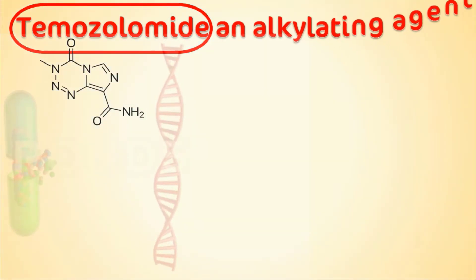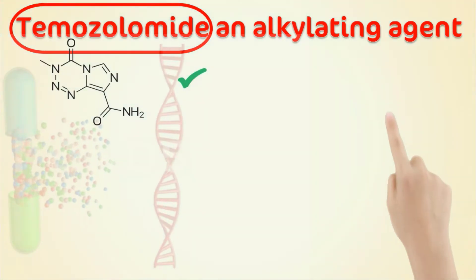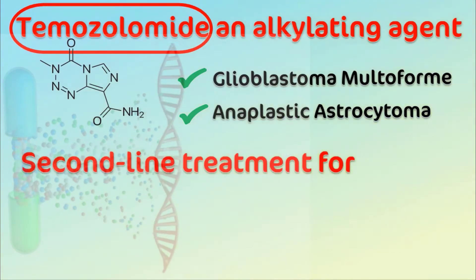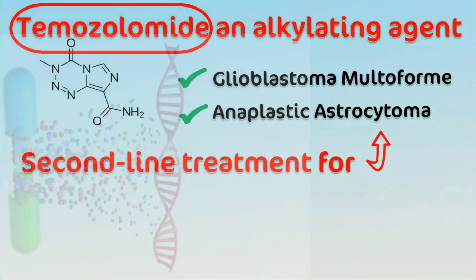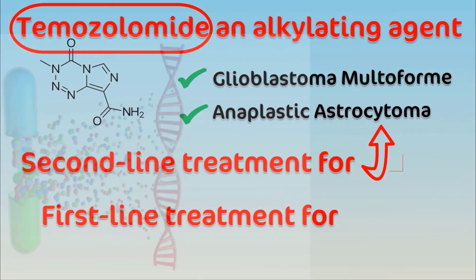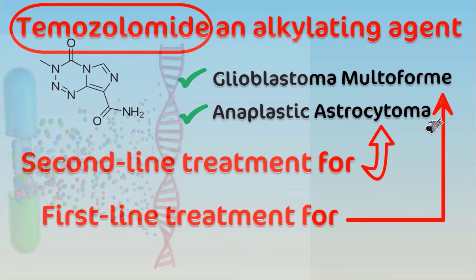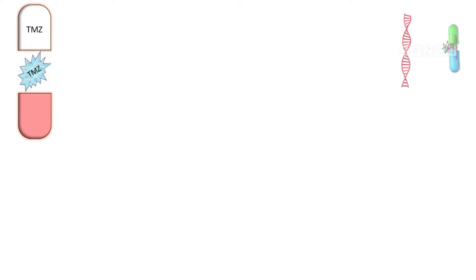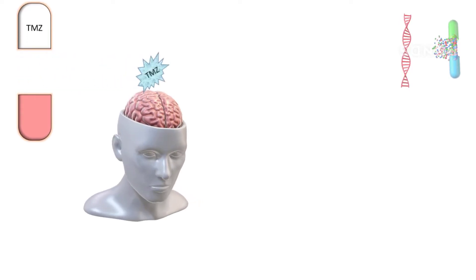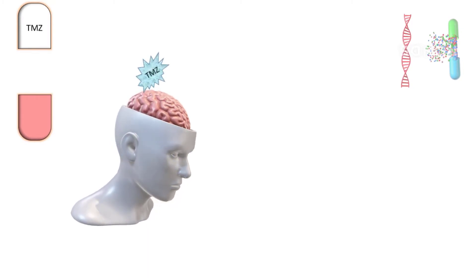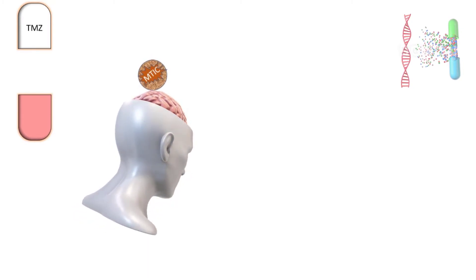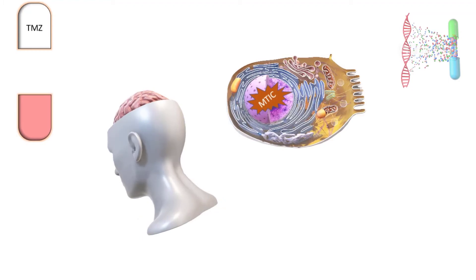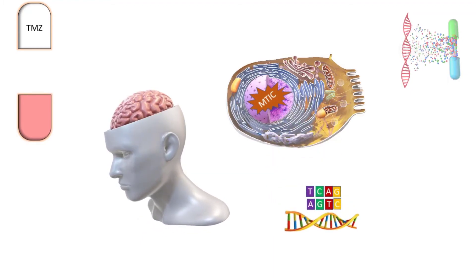Temozolomide is an alkylating agent, like dacarbazine, and is indicated for glioblastoma multiforme and anaplastic astrocytoma. It is the first-line treatment for glioblastoma multiforme and second-line treatment for anaplastic astrocytoma. Temozolomide is an oral capsule, and when it enters the body at normal pH, it converts to 3-methyl-triazen-1-imidazole-4-carboxamide, known as MTIC.